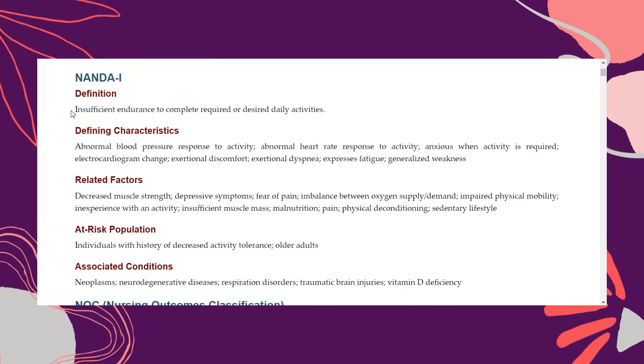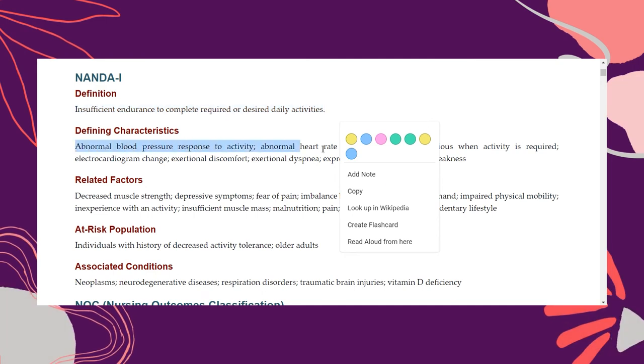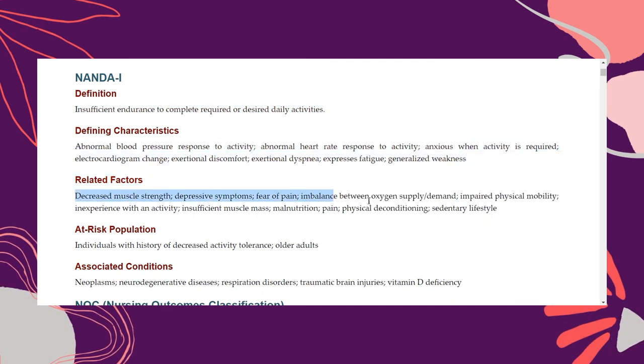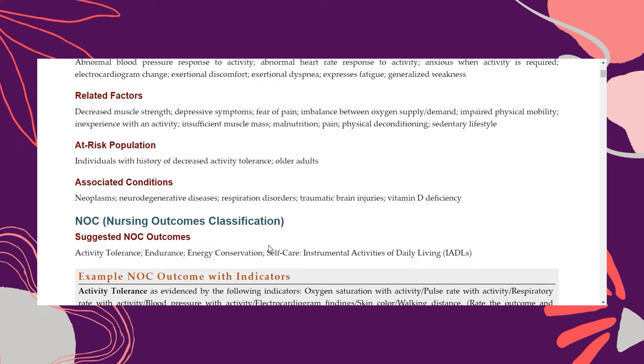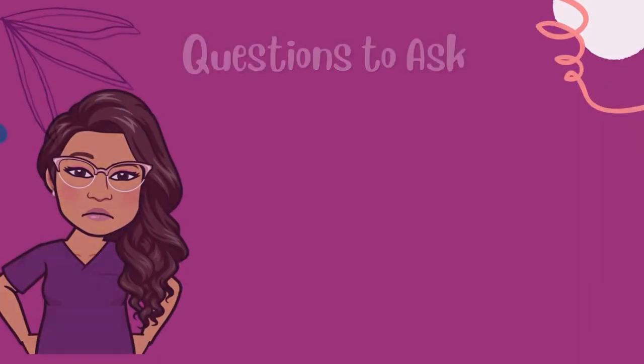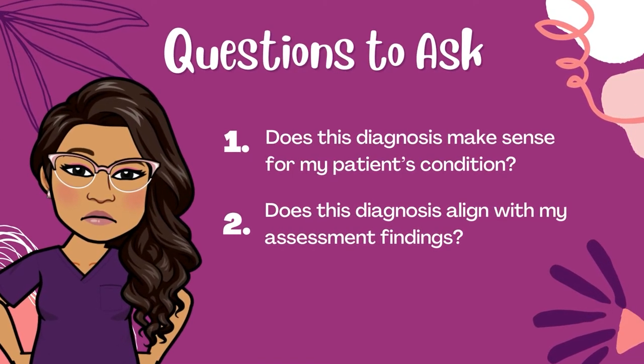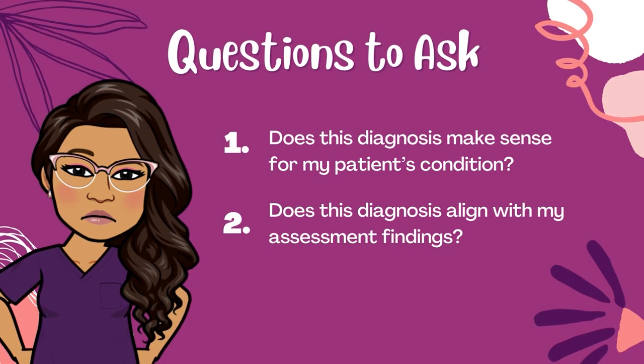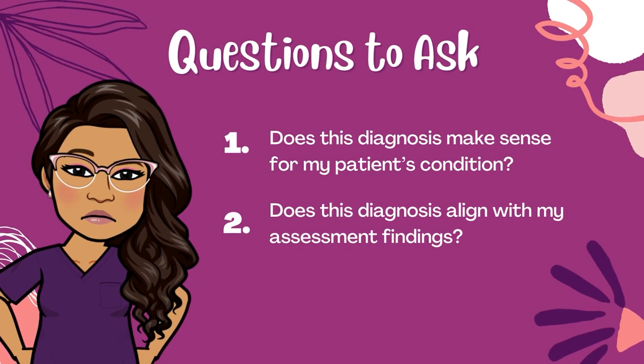You will see that the label has its own NANDA definition, the defining characteristics, related factors, the associated conditions, and the risk factors — especially if you're creating a risk diagnosis. As you are reviewing this information, there are a couple of questions I want you to ask yourself. Number one: does this diagnosis make sense for my patient's condition? And number two: does this diagnosis align with my assessment findings? If so, then that nursing diagnosis would be appropriate to include in your care plan. If not, go back to Section 2 and find a different nursing diagnosis that is more appropriate for your patient. Essentially, we're evaluating a potential nursing diagnosis and determining whether it's appropriate for your patient.